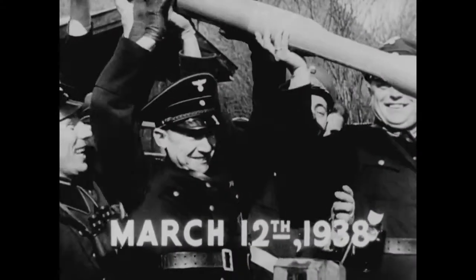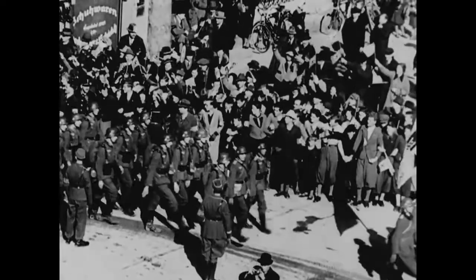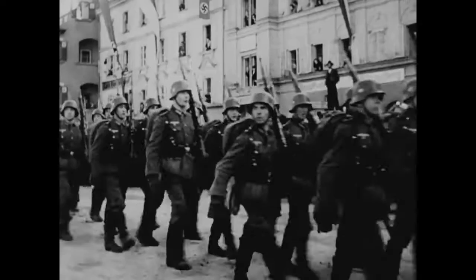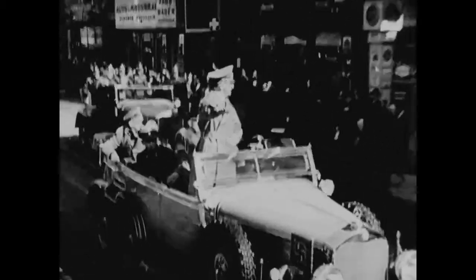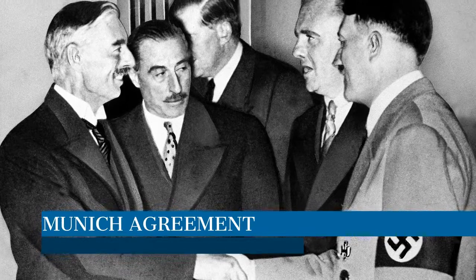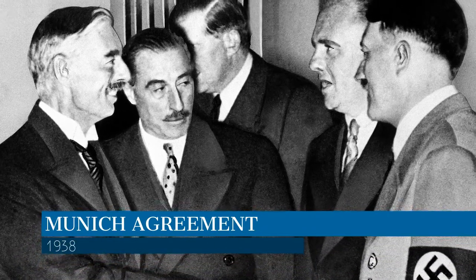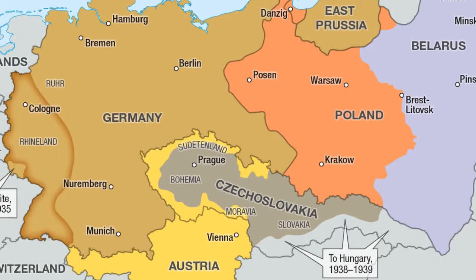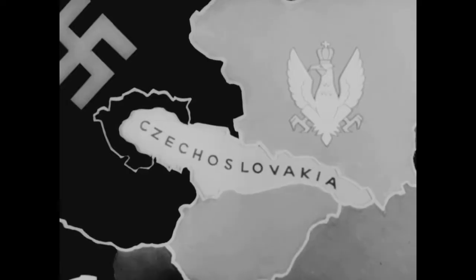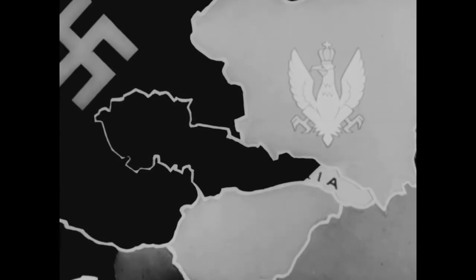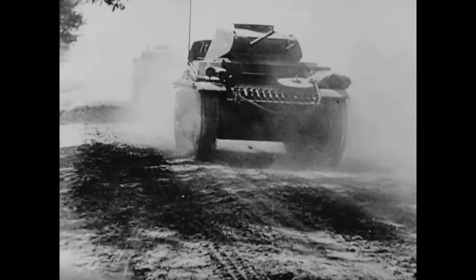The road to World War II greatly accelerated beginning in 1938 when Hitler began to expand in Europe. In March of that year, Hitler occupied Austria and then attempted to take over the Sudetenland, a German-speaking area of Czechoslovakia. Europe responded with the Munich Agreement in September of 1938, which was designed to appease Hitler and end Nazi aggression. The world hoped that giving Hitler the Sudetenland would end hostilities and avoid war, but any hopes that appeasement would satisfy Hitler were almost immediately dashed when six months after the Munich Agreement, Nazi Germany invaded the rest of Czechoslovakia.